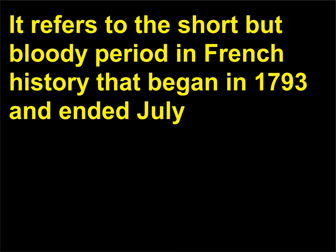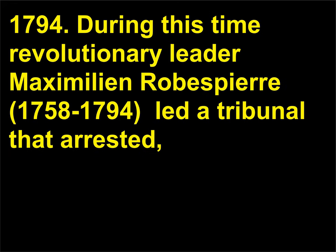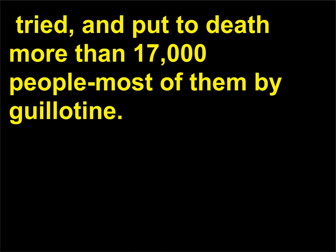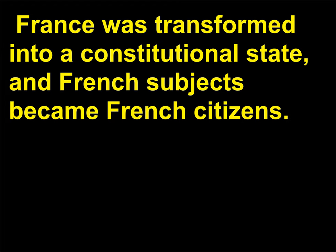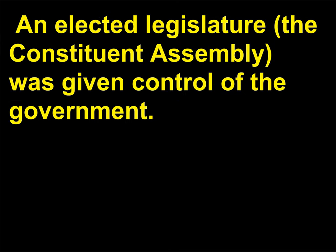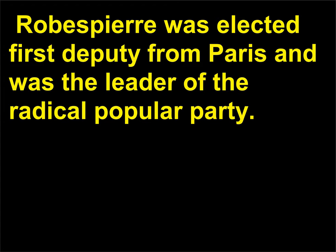The Reign of Terror refers to the short but bloody period in French history that began in 1793 and ended July 1794. During this time revolutionary leader Maximilien Robespierre, 1758–1794, led a tribunal that arrested, tried, and put to death more than 17,000 people, most of them by guillotine. In the reforms that followed the 1789 oath of the tennis court and the capture of the Bastille, France was transformed into a constitutional state, and French subjects became French citizens. An elected legislature, the Constituent Assembly, was given control of the government. Robespierre was elected first deputy from Paris and was the leader of the radical popular party.